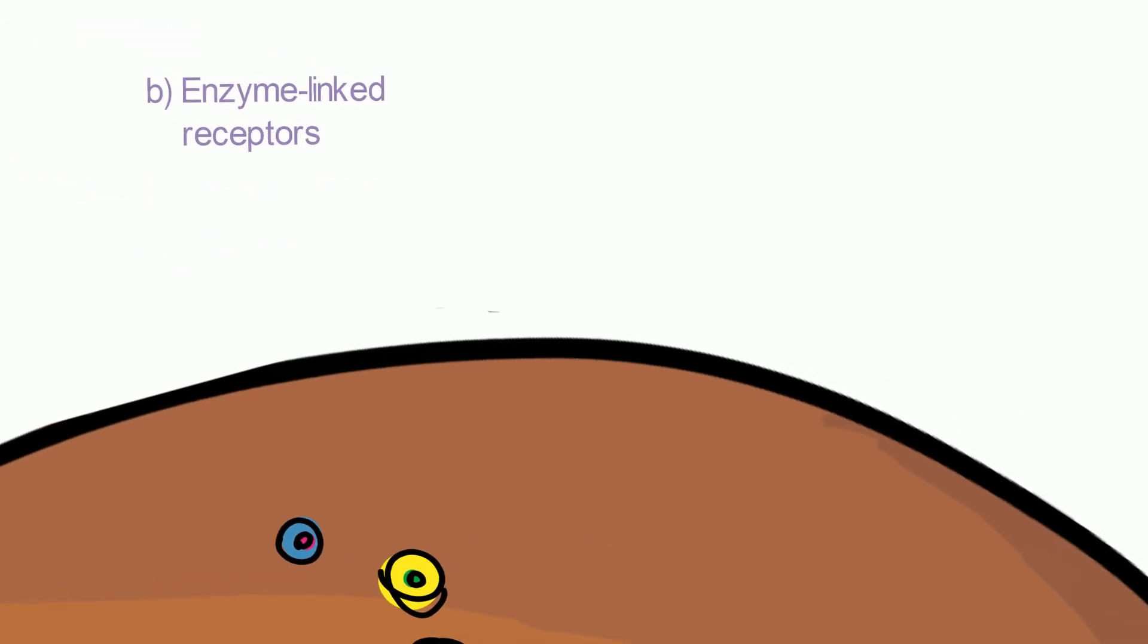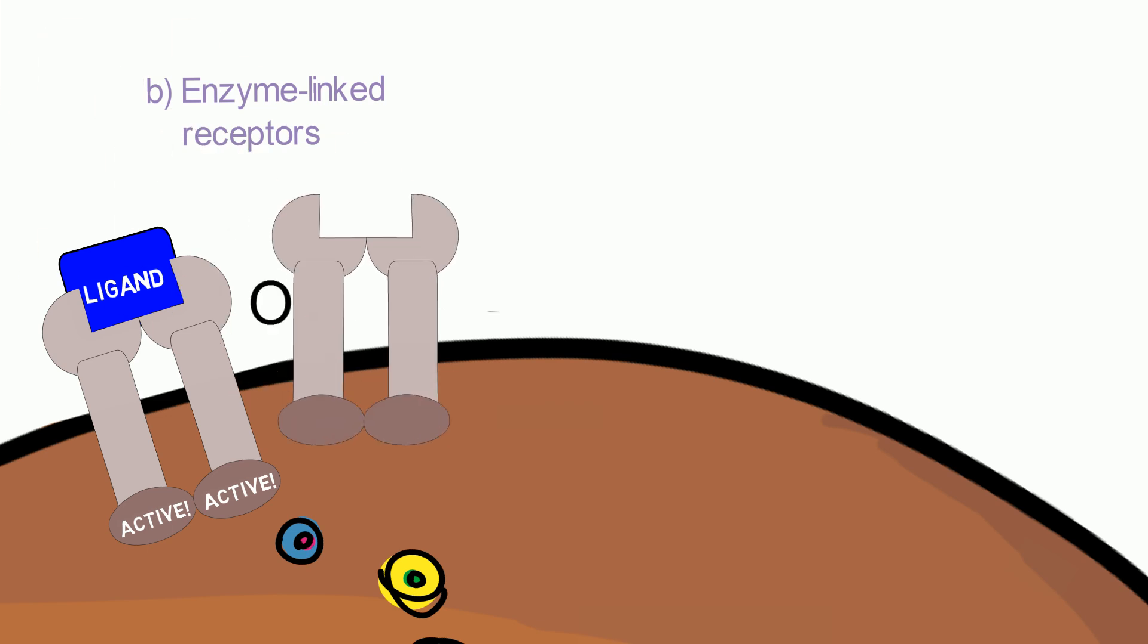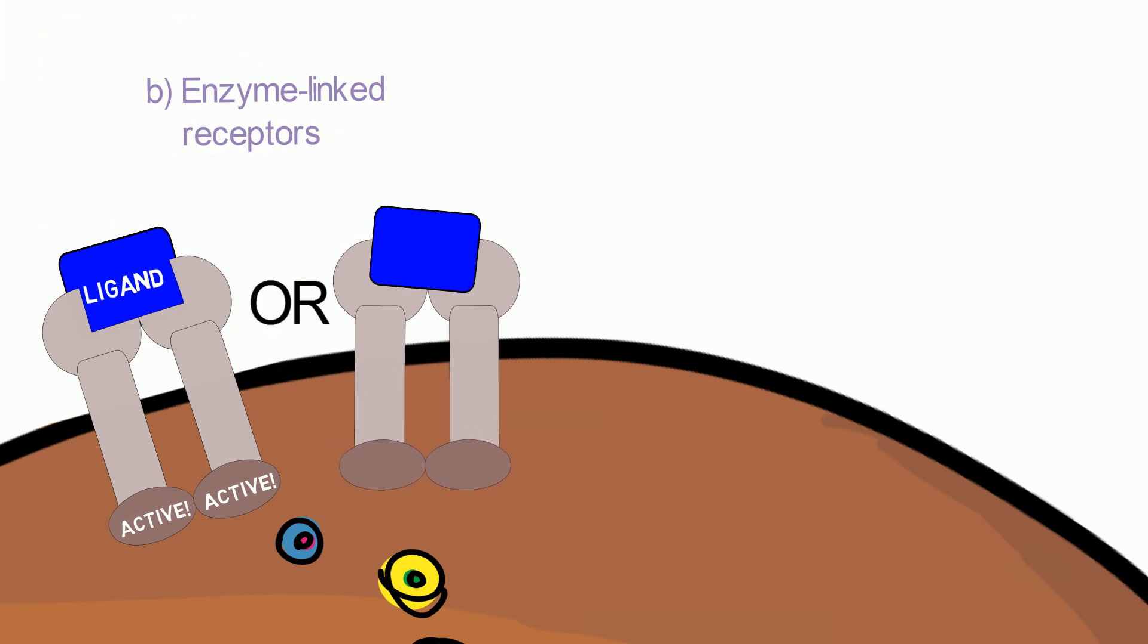Enzyme linked receptors can function directly as enzymes. They dimerize when bound to a ligand, leading to activation of their intracellular catalytic sites. Alternatively, the receptors are activated after ligand binding and they activate other enzymes.